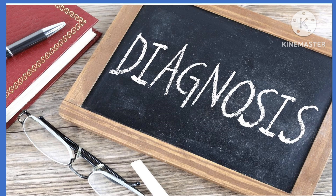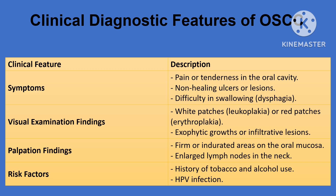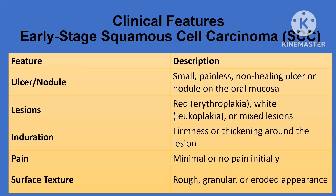Diagnosis of oral squamous cell carcinoma can be made with clinical examination, histopathological reports, and imaging techniques. Clinical diagnosis is based on visual examination, symptoms, palpation, and the presence of risk factors. In the early stage, the cancer may appear as a small ulcer or bump inside the mouth that does not heal. You may also notice red and white mixed patches, known as erythroplakia.